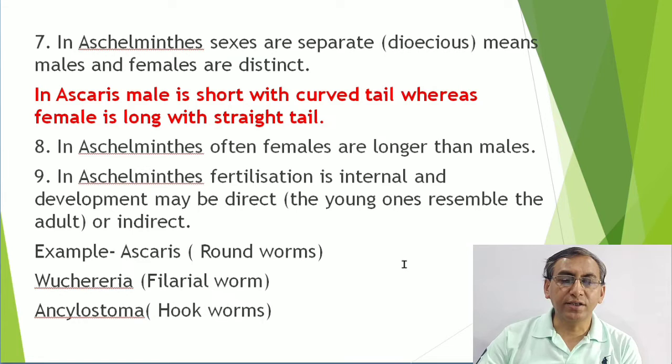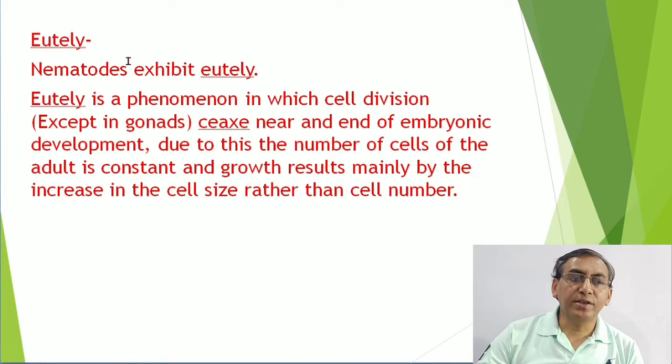Examples of Aschelminthes: Ascaris lumbricoides is known as the roundworm, Wuchereria bancrofti is the filarial worm, and Ancylostoma duodenale is known as the hookworm.